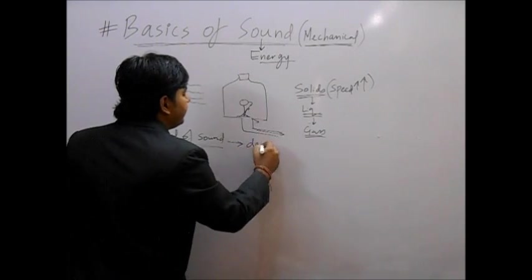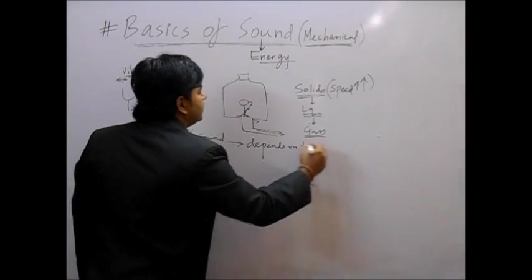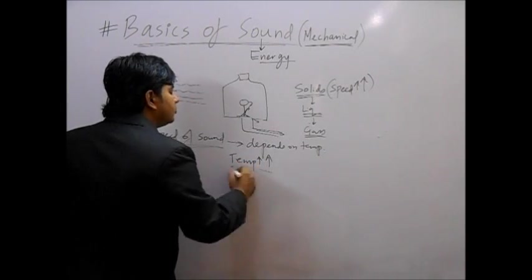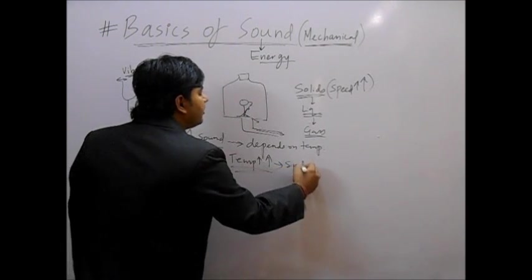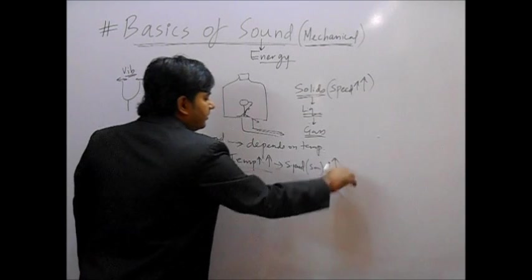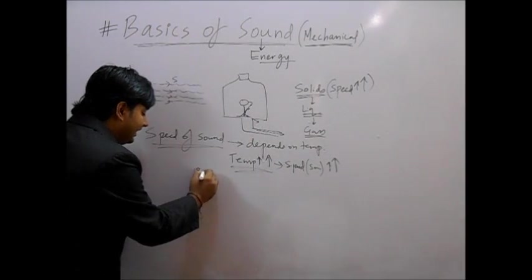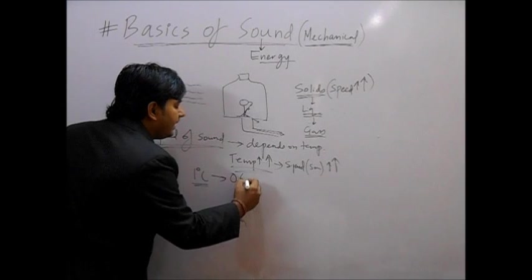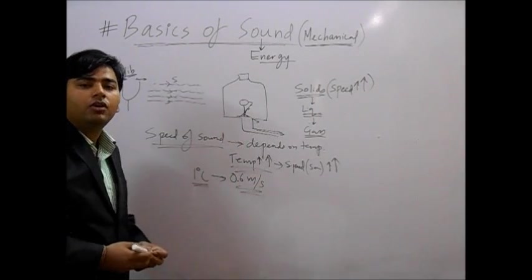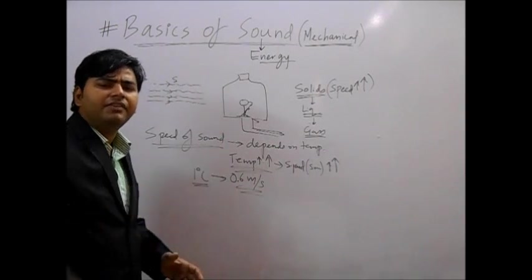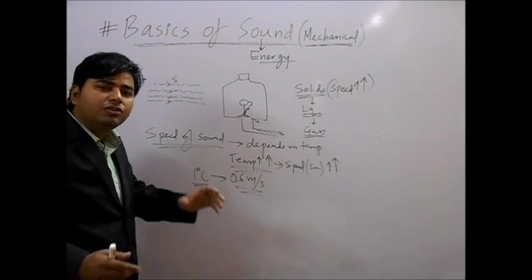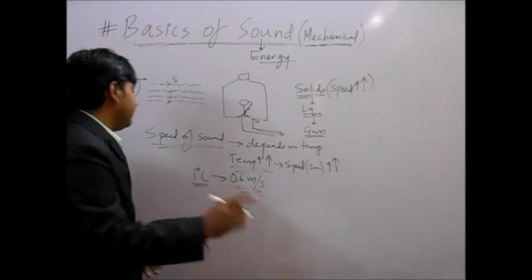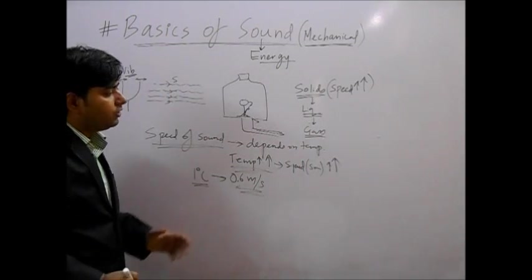Then this speed of sound, it also depends on temperature. Speed depends. If we increase the temperature, sound speed will increase. What value is for every one degree rise in temperature? If we increase the temperature 1 degree, speed of sound will increase by 0.6 meter per second. Means that if room temperature is 37 degrees, if speed was 340 meter per second, then it would be 38 degrees, it would be 340.6 meter per second. So with the increasing temperature, speed of sound also increases.